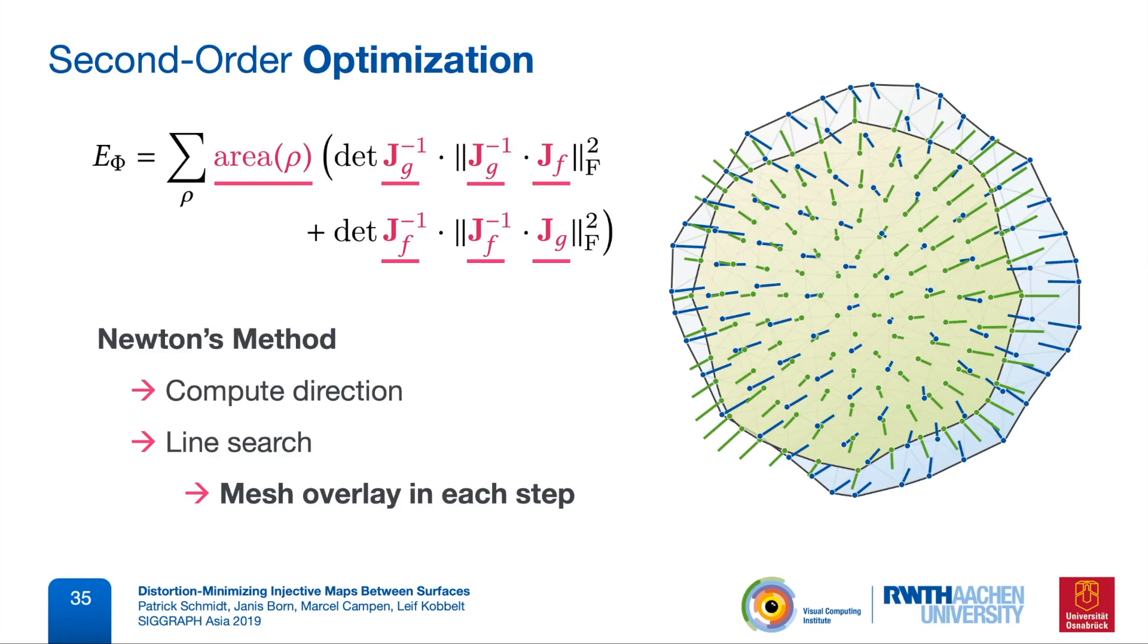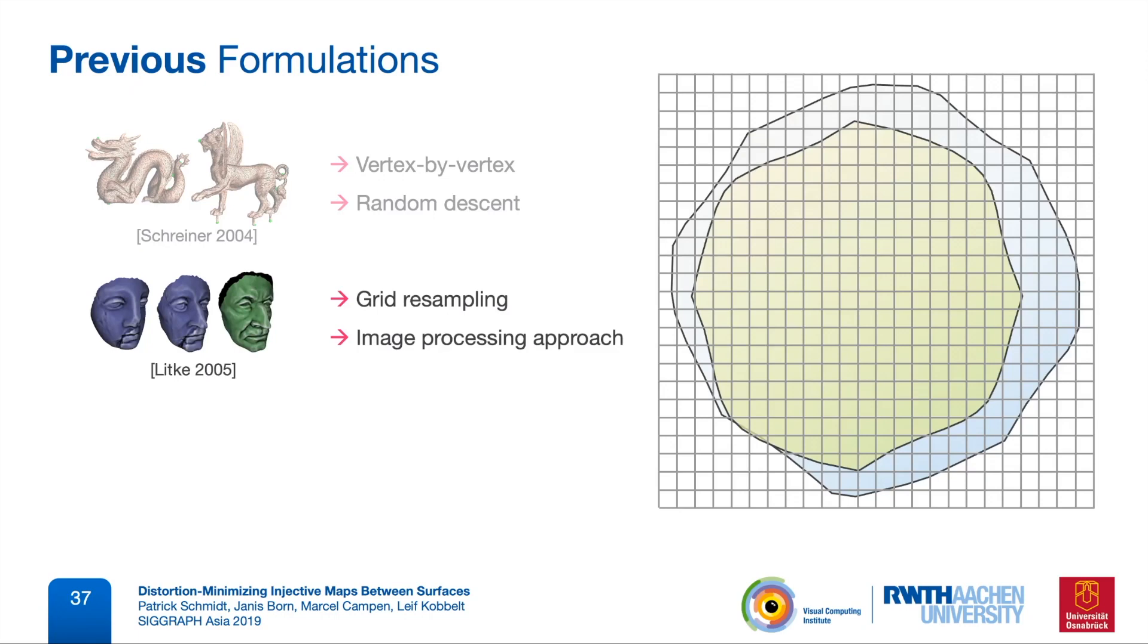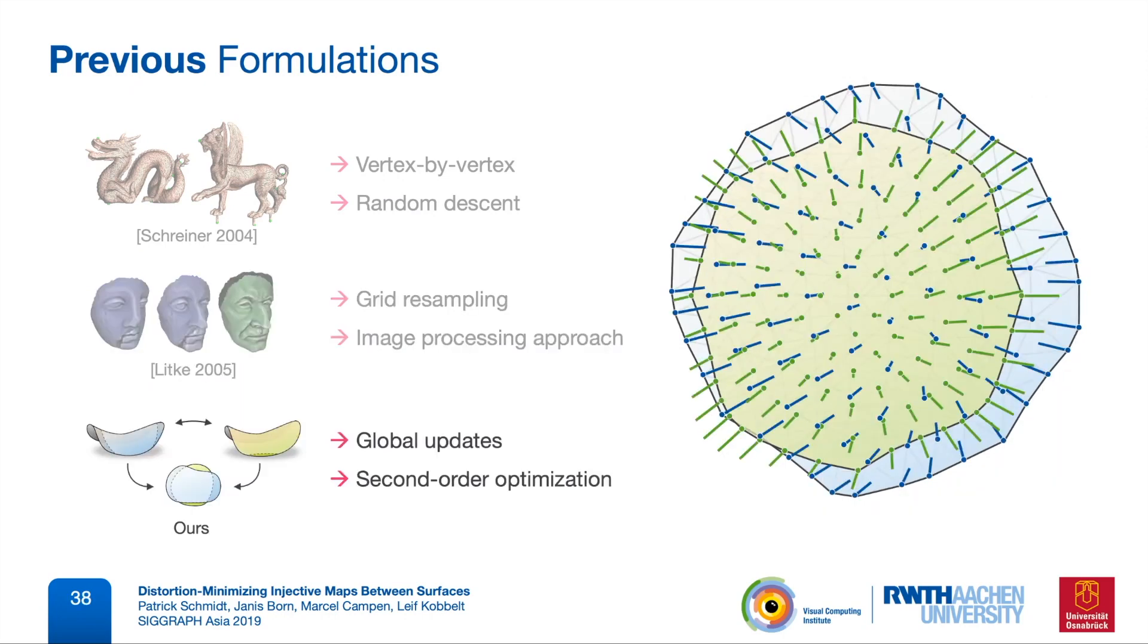At this point, let's have a quick look back at the two previous approaches to this problem. One of them didn't have the global intermediate domain and had to update one vertex at a time within a local temporary one-ring parameterization, and the authors did that along random search directions. The second approach had to resort to a grid resampling of the intermediate domain in order to use image processing techniques. With our formulation so far, we already managed to express the problem as a single global second-order optimization that works directly on the vertices of the input meshes. So we can update all vertices at a time and we're not going to suffer from resampling artifacts.